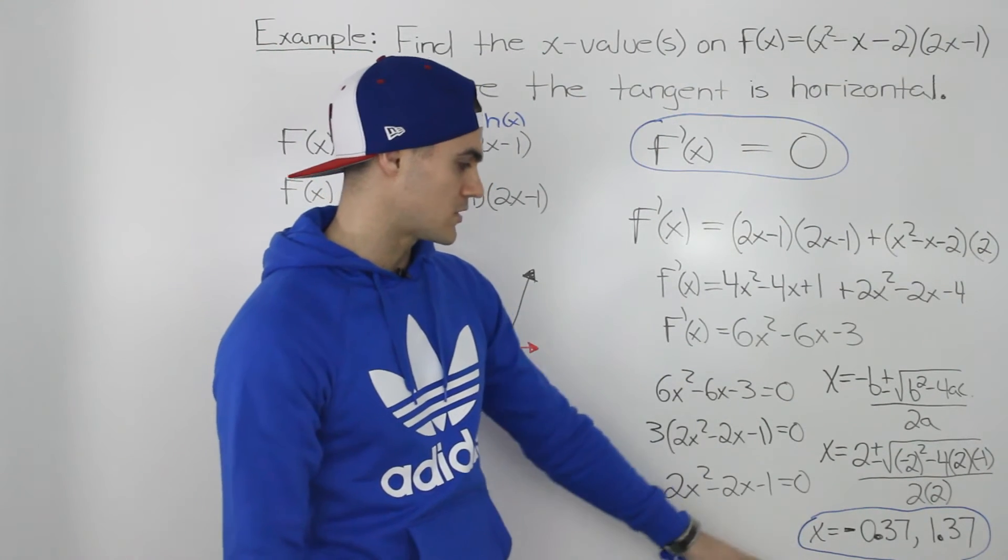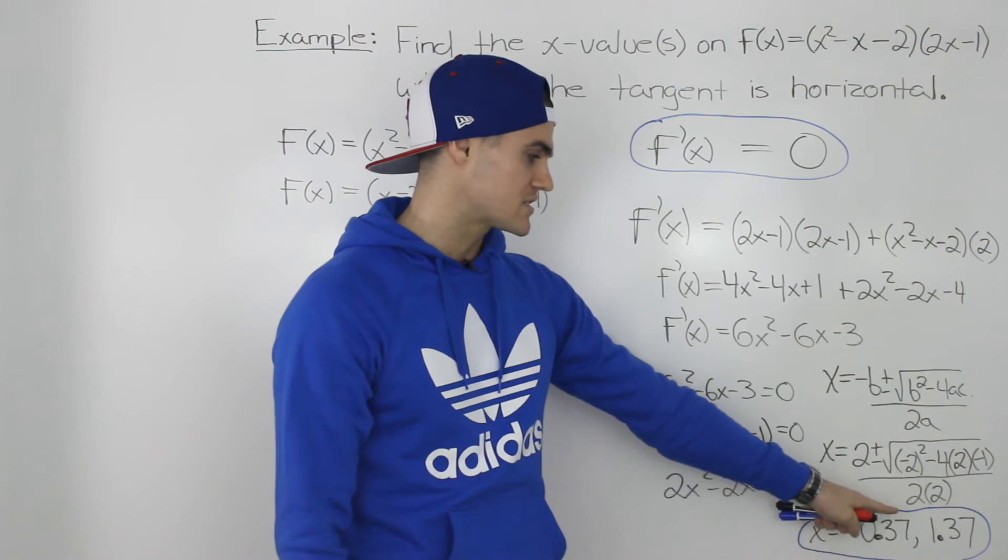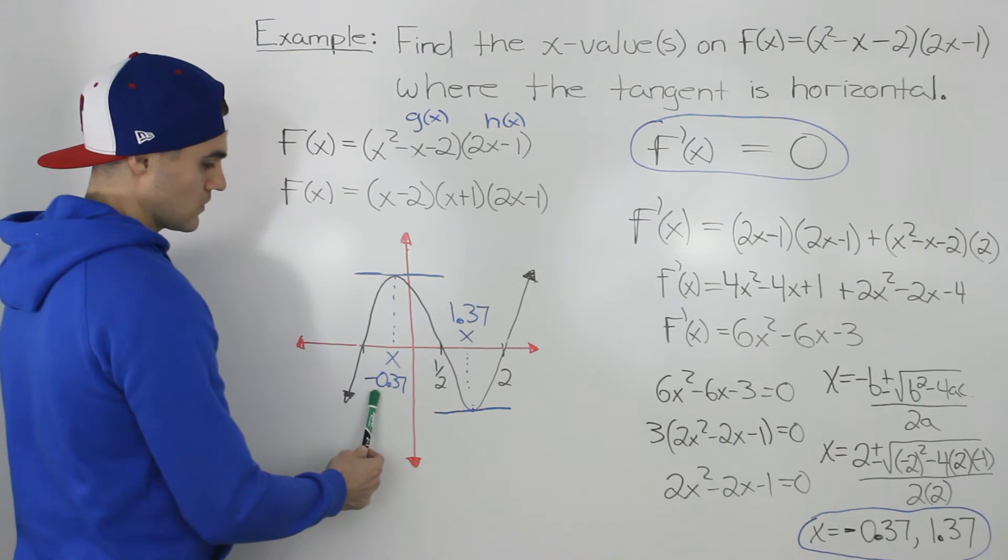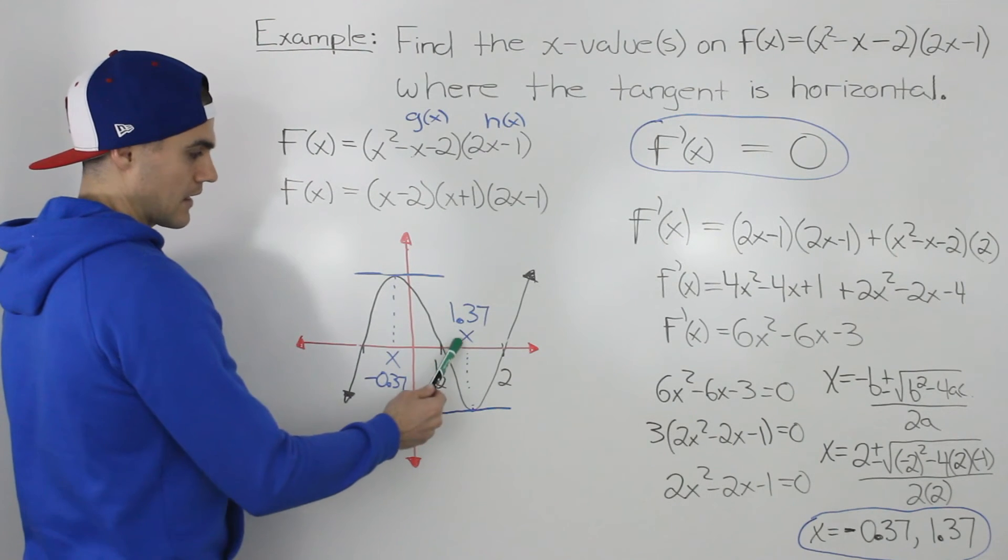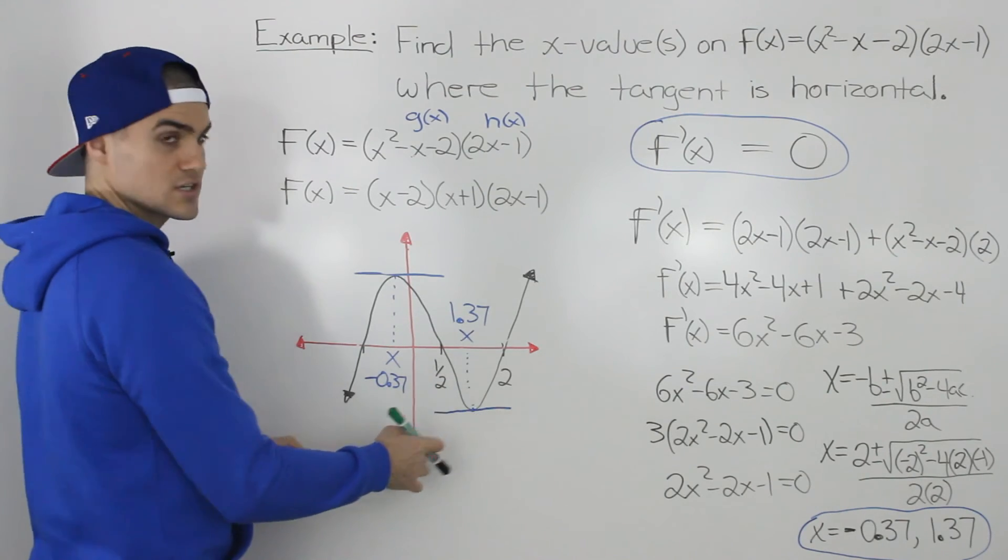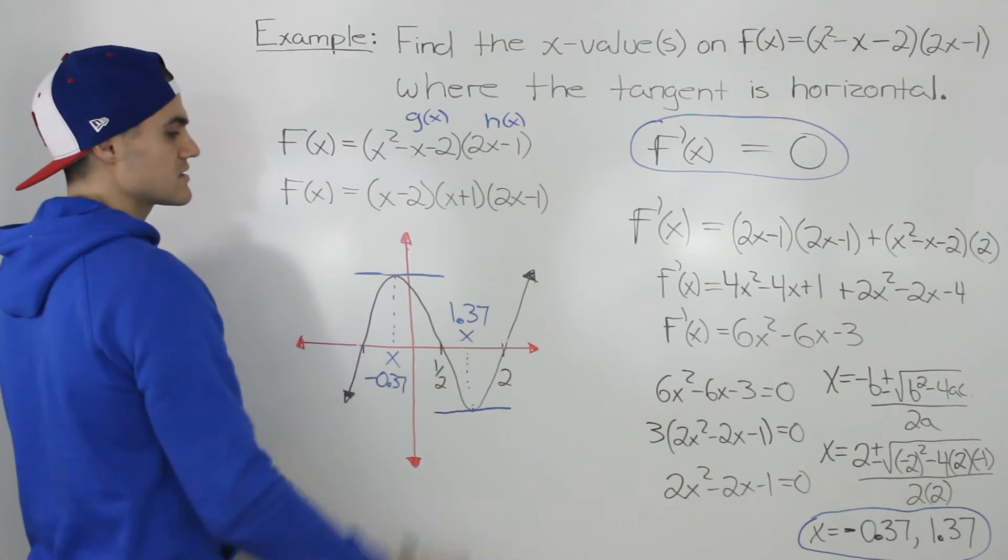So doing all that algebra, we would get x values of negative 0.37 and positive 1.37. So at that x value of negative 0.37 and the other x value being 1.37, a horizontal tangent is occurring on this function.